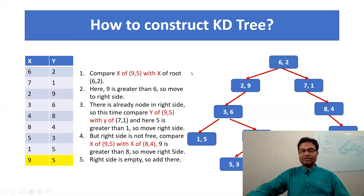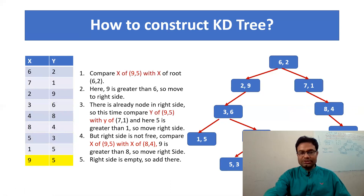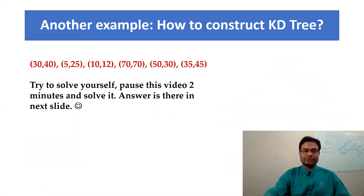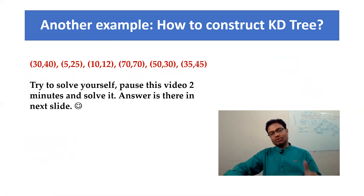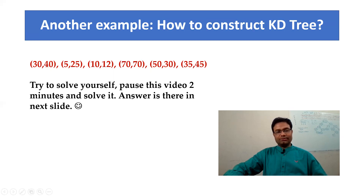That's why we started the construction from the first node — you can make a lot of variations of this tree. This is another example of how to construct the nodes. Here you can see each node has two values. Pause this video for two minutes and draw yourself whether you can construct it or not. If any doubt, go back, or just try to make it yourself.